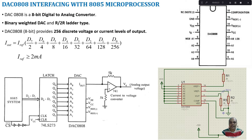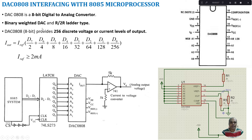Let us start with the fundamentals of DAC 0808 IC. It is an 8-bit digital-to-analog converter, meaning it converts your digital data into an analog voltage or current. It is an 8-bit DAC, and we have two types: binary weighted DAC and R2R ladder type.